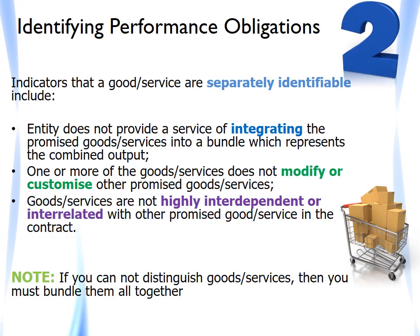The standard lists the following indicators which an entity should consider in determining whether or not the second criterion has been met — whether the good or service is separately identifiable from other goods or services promised in the contract. This requires us to consider: does the entity provide a service of integrating promised goods or services into a bundle representing the combined output for which the customer has contracted? Or does one or more of the goods or services modify or customize other promised goods or services? Or are the goods or services highly interdependent or interrelated? This has been one of the areas which has been addressed by the boards in their clarifications, so we will come back to this later on.